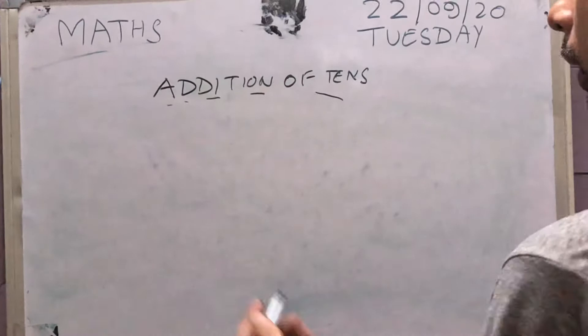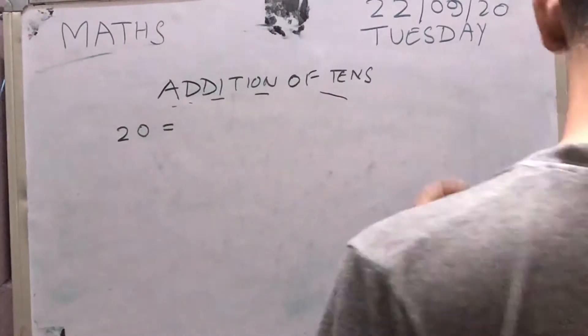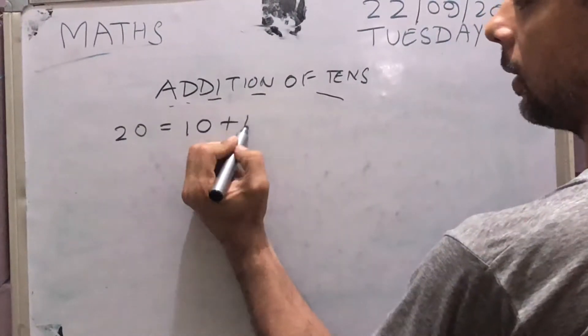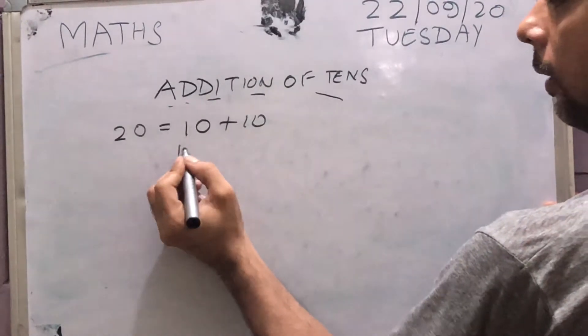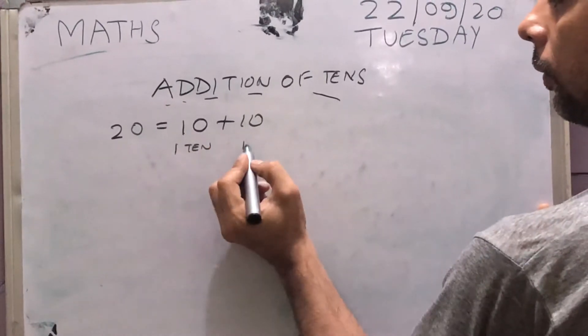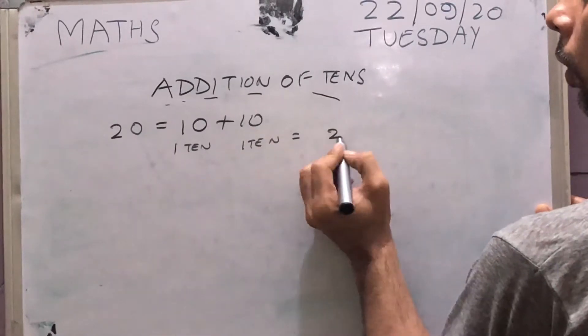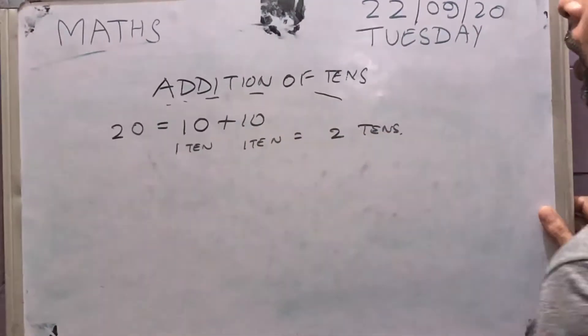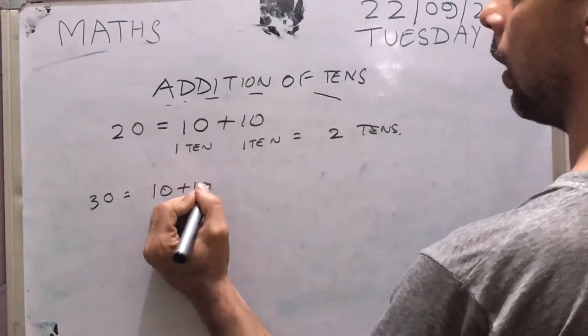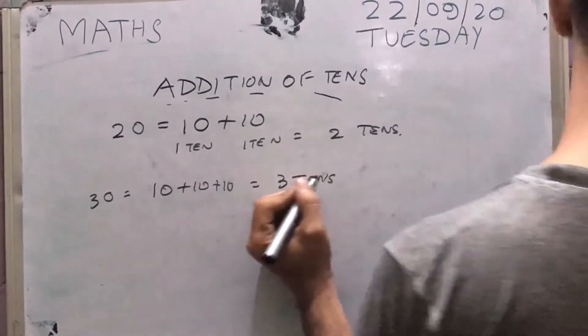Tens kya hai? Like 20. So 20 can be divided into two tens, 10 plus 10. This is 1 ten and this is another 1 ten. So in total, 1 plus 1, 2 tens. 30 will be 10 plus 10 plus 10 equal to 3 tens.